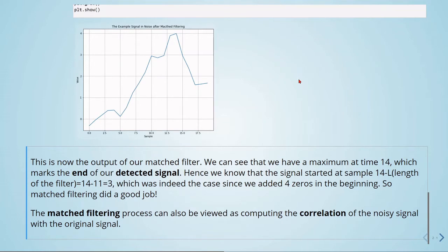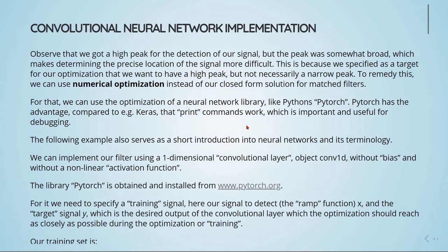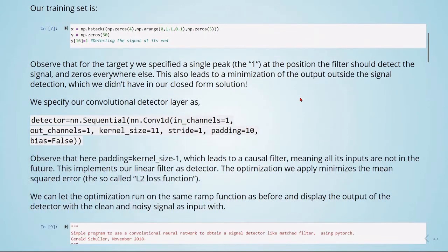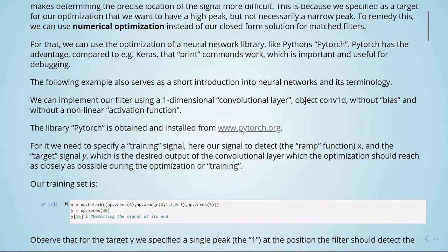So the matched filtering process can also be viewed as computing the correlation of the noisy signal with the original signal. In the following example, we will implement something like a matched filter, but using convolutional neural networks. So it just serves as a short introduction into neural networks and its terminology. We are going to use PyTorch. So we will not go in detail here how PyTorch really works, but it's more an example to get a short introduction.